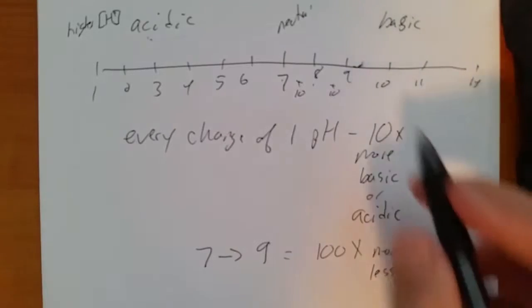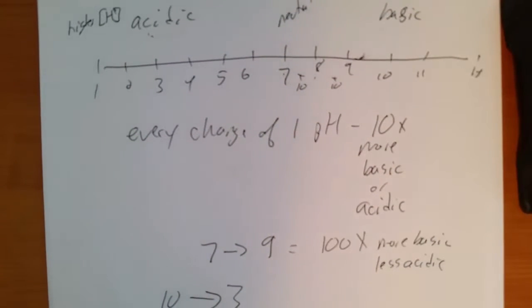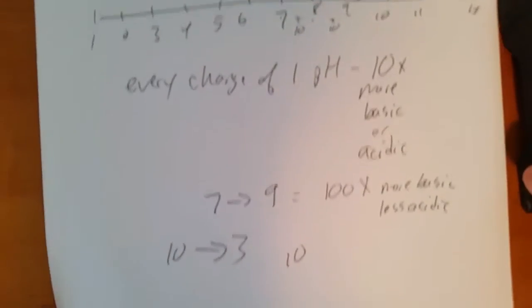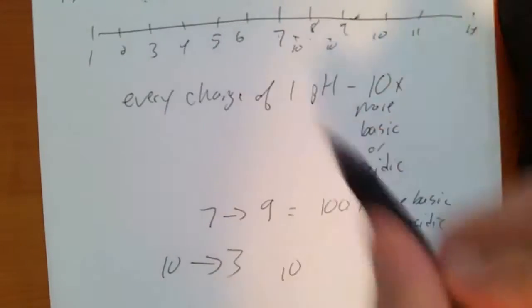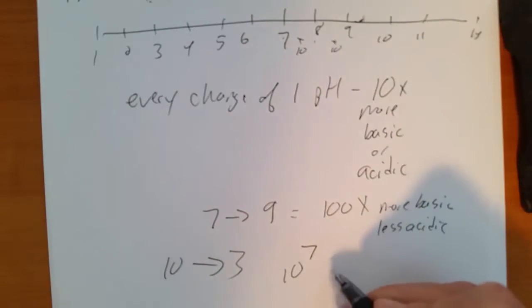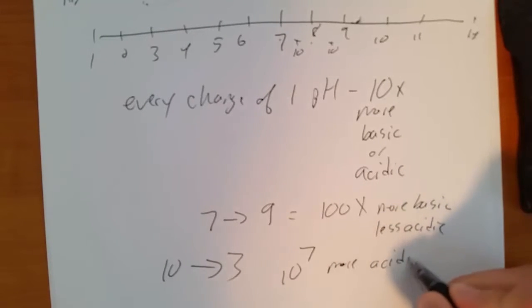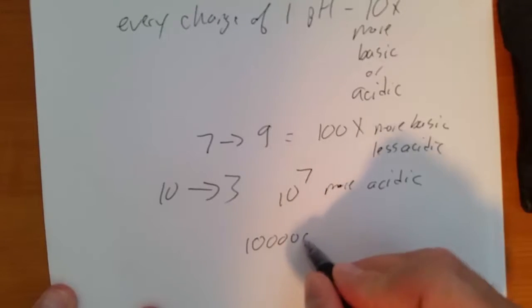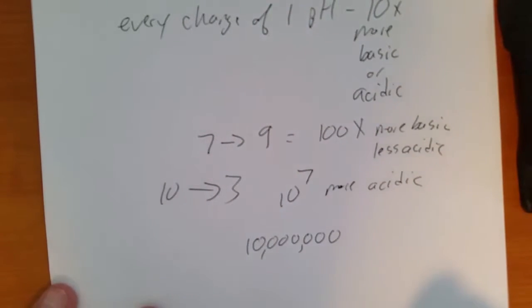If we go from 10 all the way down to 3, it's going to be 10 to the 1, 2, 3, 4, 5, 6, 7, 10 to the 7th power more acidic. Remember 10 to the 7th is 1 with 1, 2, 3, 4, 5, 6, 7 zeros. So 10 million times more acidic.